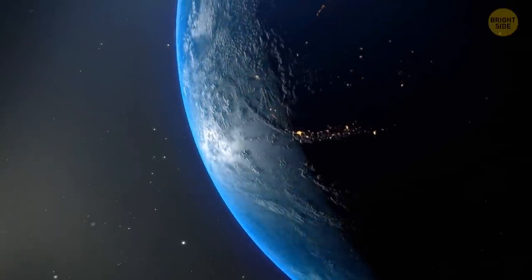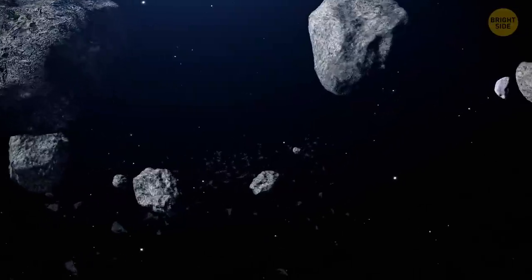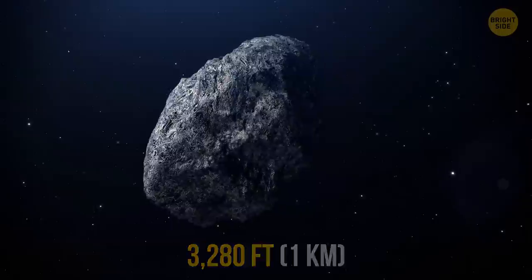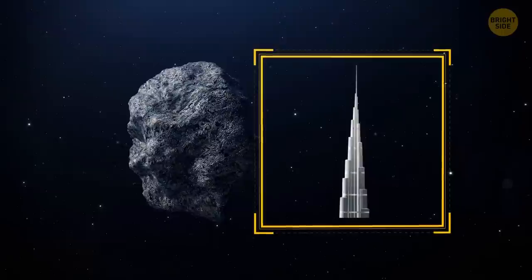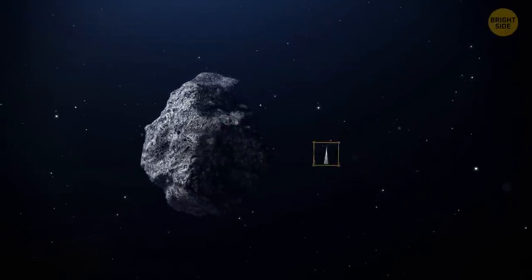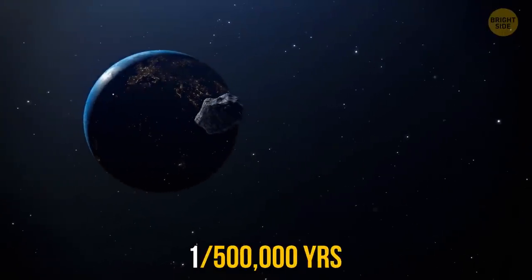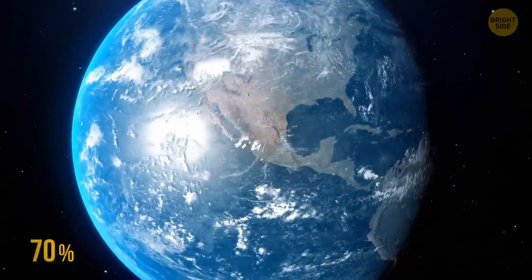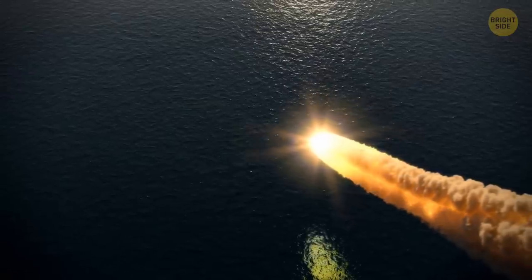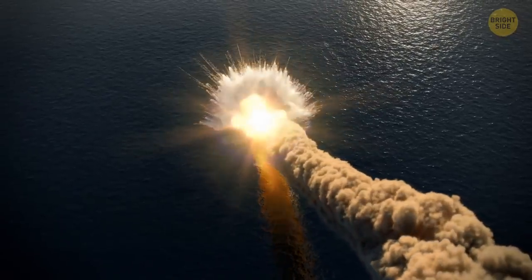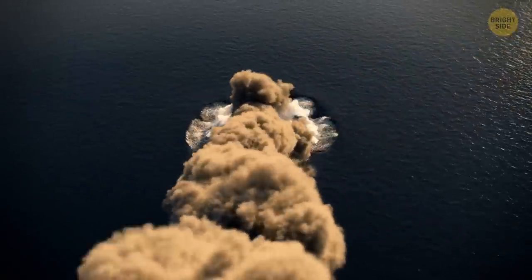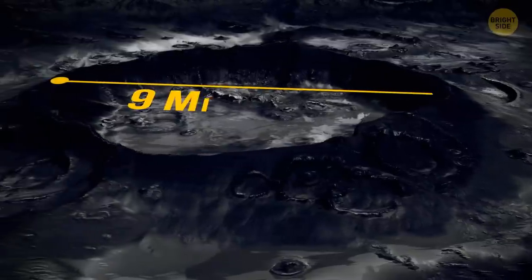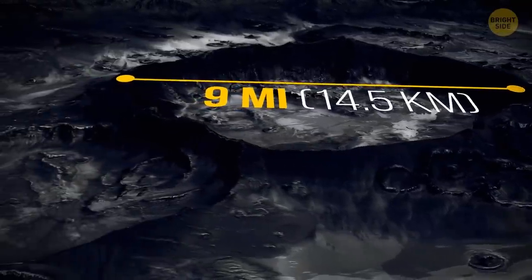Besides, our planet has survived something even worse. 3,280 feet. This is higher than the tallest tower in the world, the Dubai Burj Khalifa tower. Such collisions occur once every 500,000 years. We're not sure when such a collision occurred the last time. 70% of our planet is covered with water. If such meteorites fell into the ocean, it would be extremely difficult to find their traces. But we can assume the possible consequences. The wave would have swept across the entire hemisphere. The crater would be about 9 miles in diameter, and that would be a complete disaster.